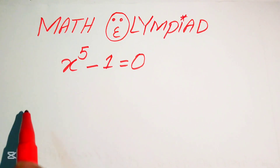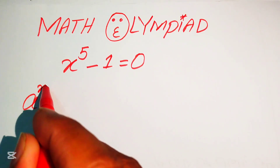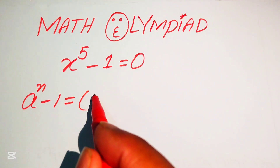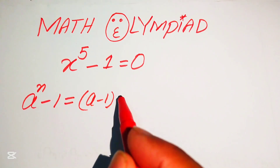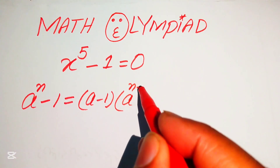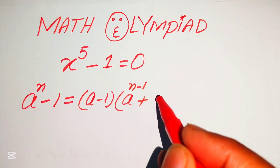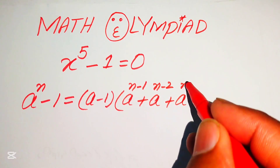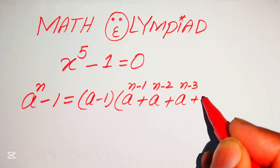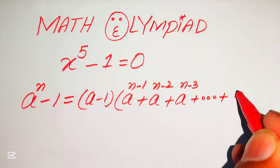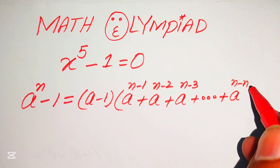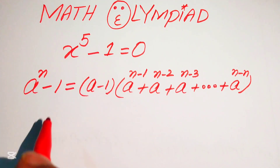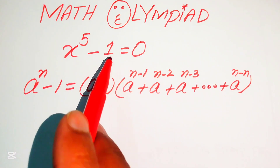Here we can apply this nice algebraic formula: if we have a to the power of n minus 1, it equals a minus 1 times of a to the power of n minus 1, plus a to the power of n minus 2, plus a to the power of n minus 3, and so on up to a to the power of n minus n. We apply this formula to break our x to the power of 5 minus 1.